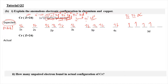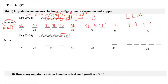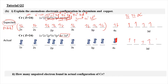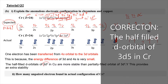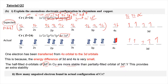Since the actual configuration is 4s1 and 3d5, we write the SPDF notation again and draw the orbital diagram once more. The unaffected part is copied back. Because one electron from 4s is transferred to 3d, the 4s has only one electron remaining. Then we copy the 3d: 1, 2, 3, 4, and the transferred electron goes in with the same spin, following Hund's rule. One electron has been transferred from 4s to 3d because the energy difference is very small, and the half-filled 3d5 orbital is more stable than the partially filled 3d4, providing extra stability.